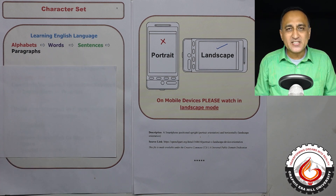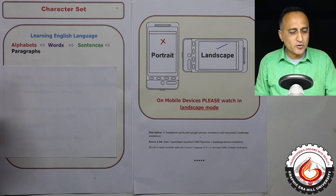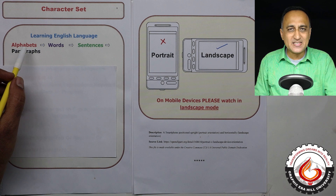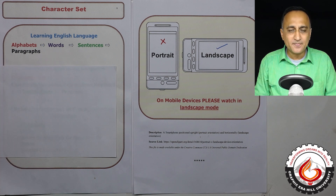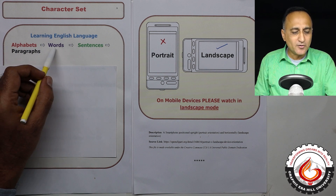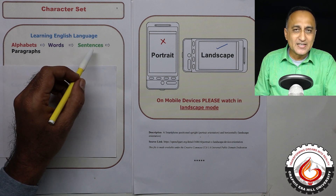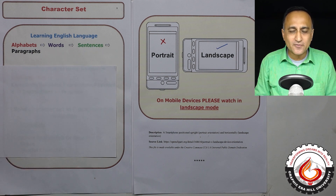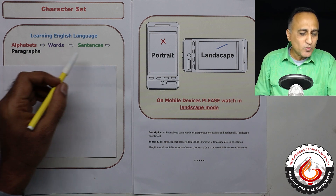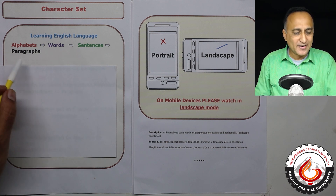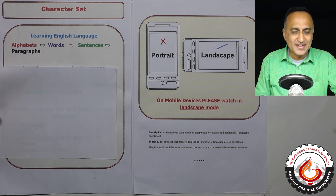If you had to learn English or even Hindi, your teachers would have taught you the alphabets — A, B, C — initially. After you learned the alphabets, you would have learned to form words. After forming words, you would create sentences following the rules of grammar and semantics, and then convey your thoughts through writing paragraphs or essays.